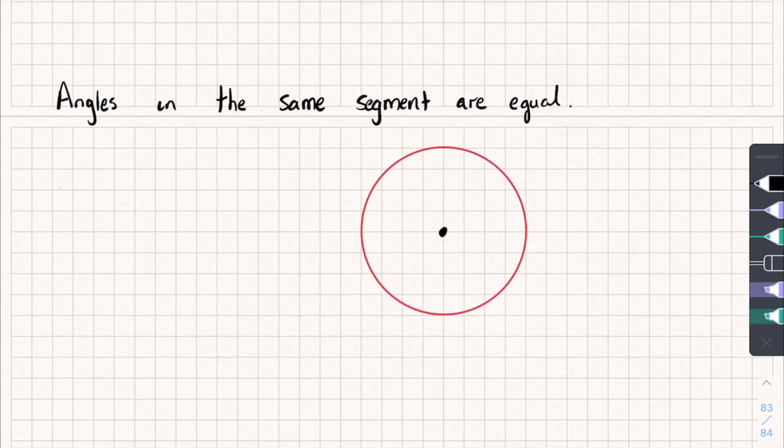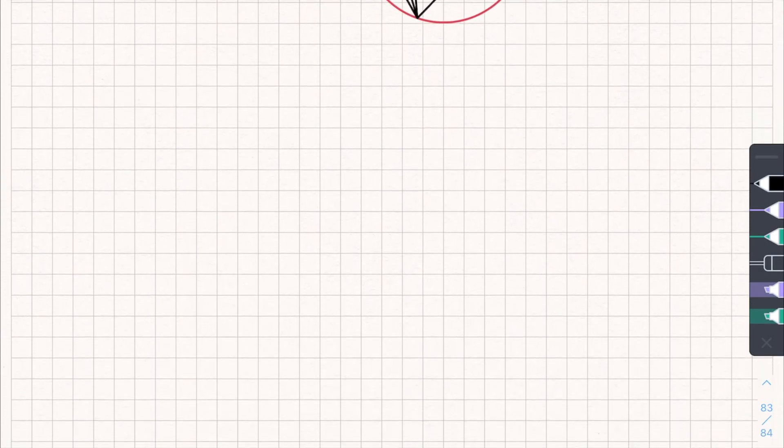And the final one, I think, angles in the same segment are equal. So what do I mean by this? Well, say I draw on a chord. And any angle I draw by connecting one edge of the chord to the circumference and another end of the chord to the circumference, so this angle here would be x. If I do that anywhere else in the same segment, they will be the same size angle. So that will also be x. And it doesn't matter where we do it, we will always get the same size angles. There we go.